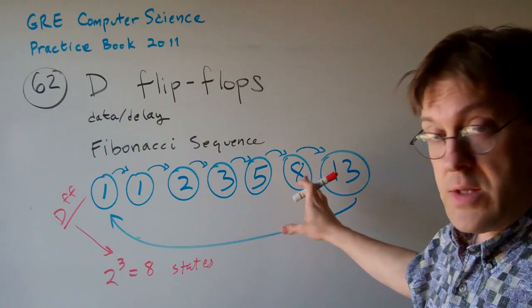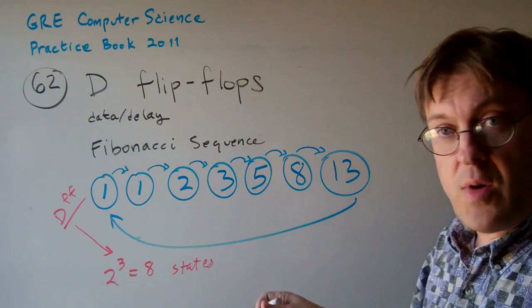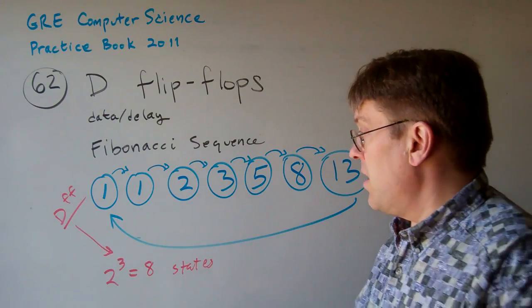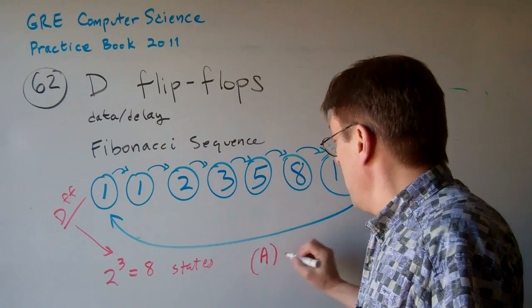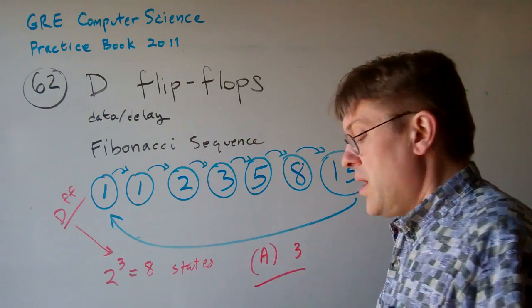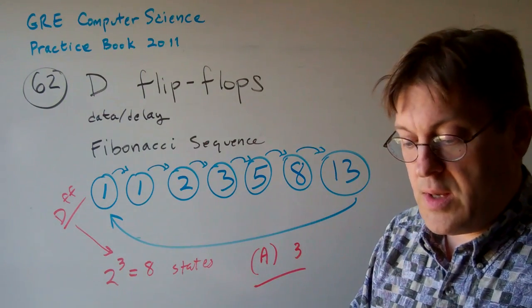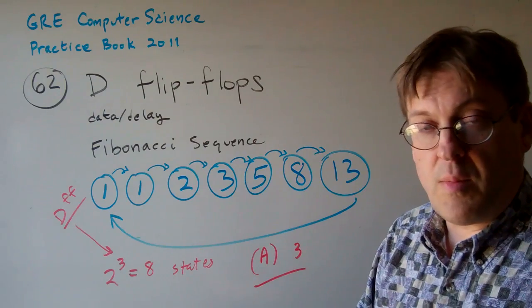So the short answer to the question is A. We're going to need 3 D flip-flops. That's the minimum number.